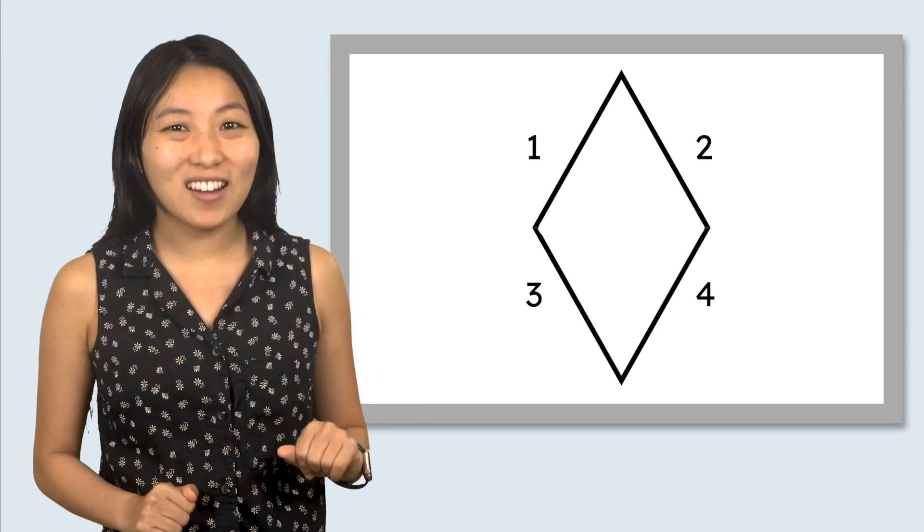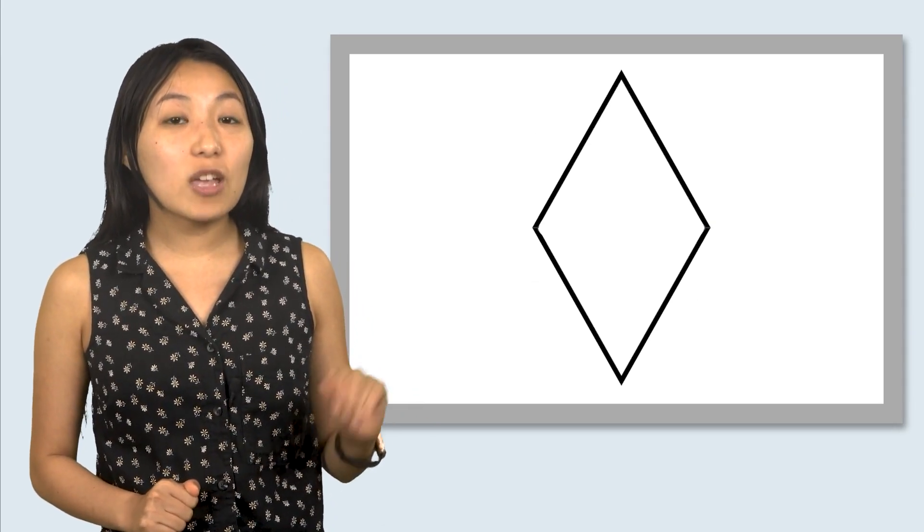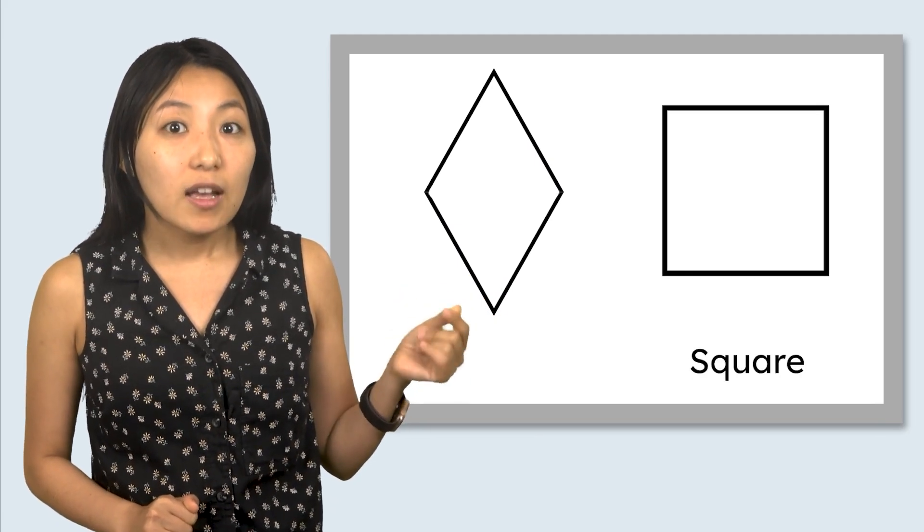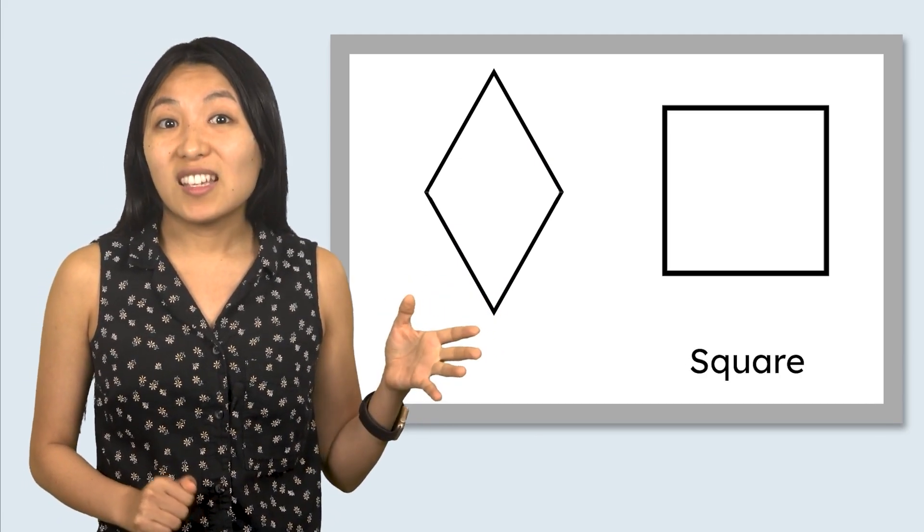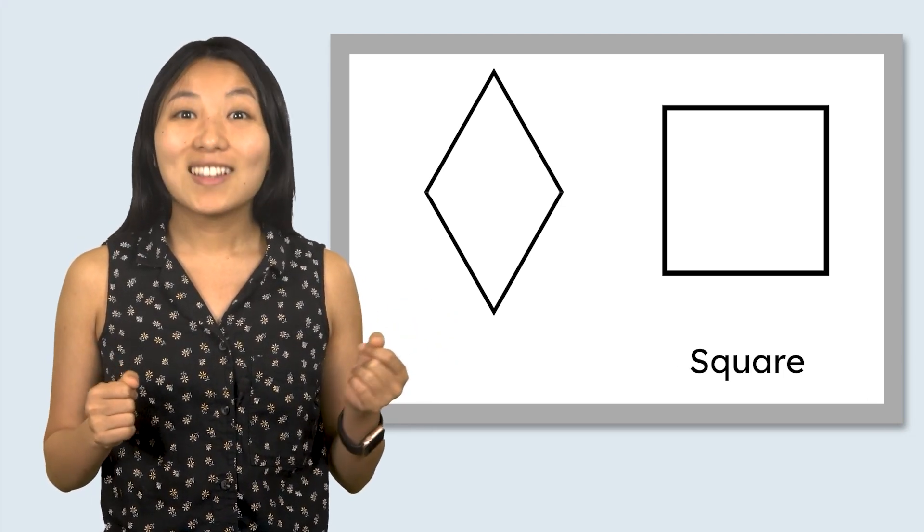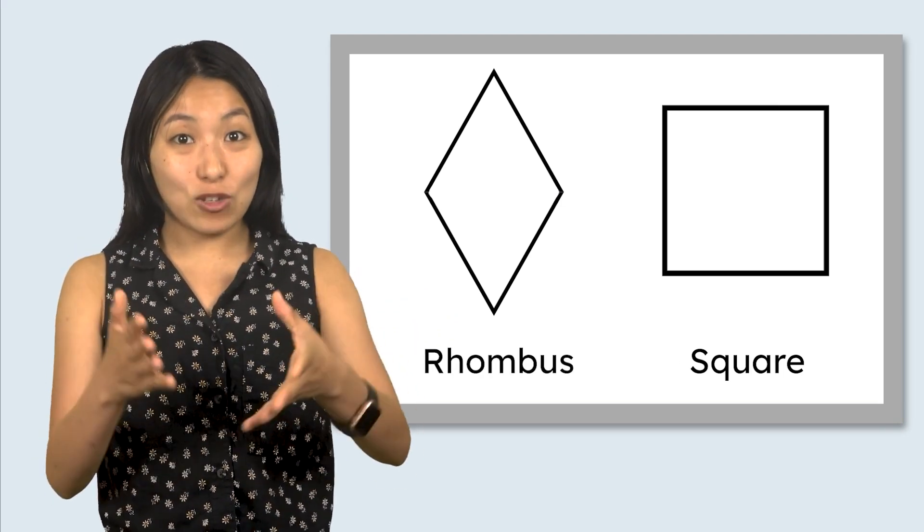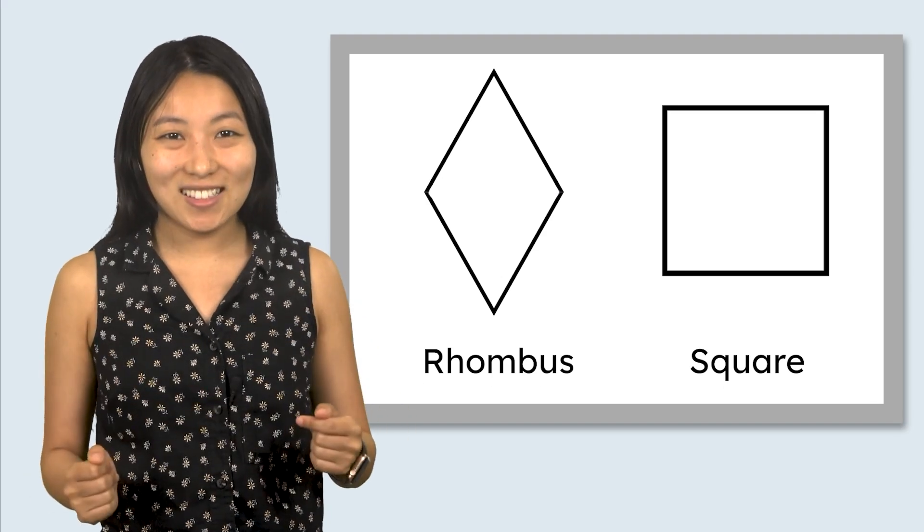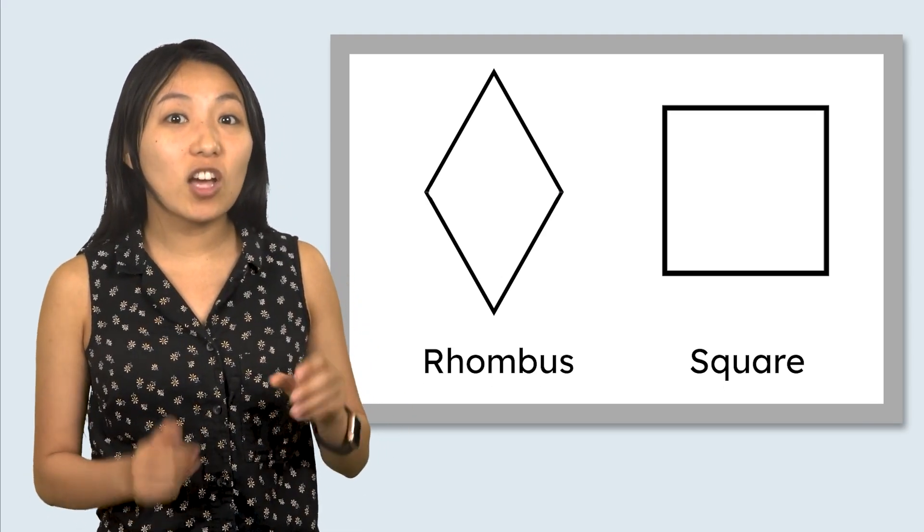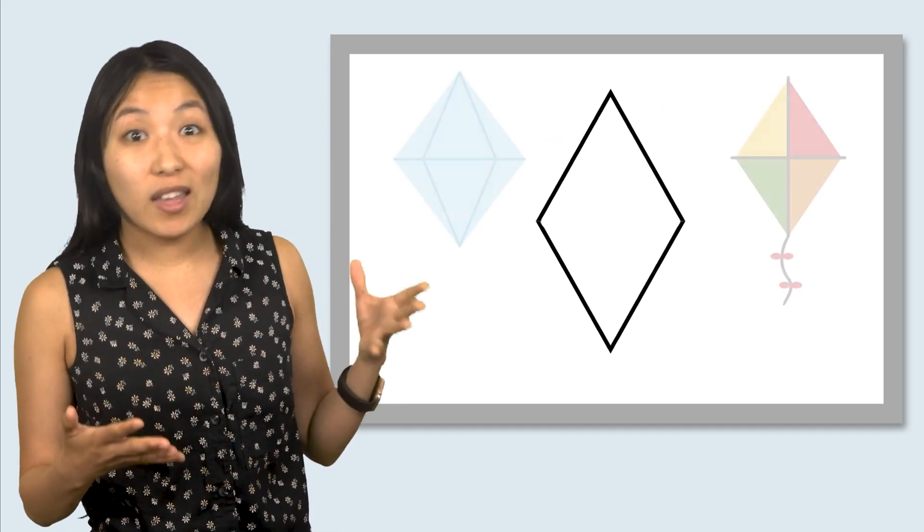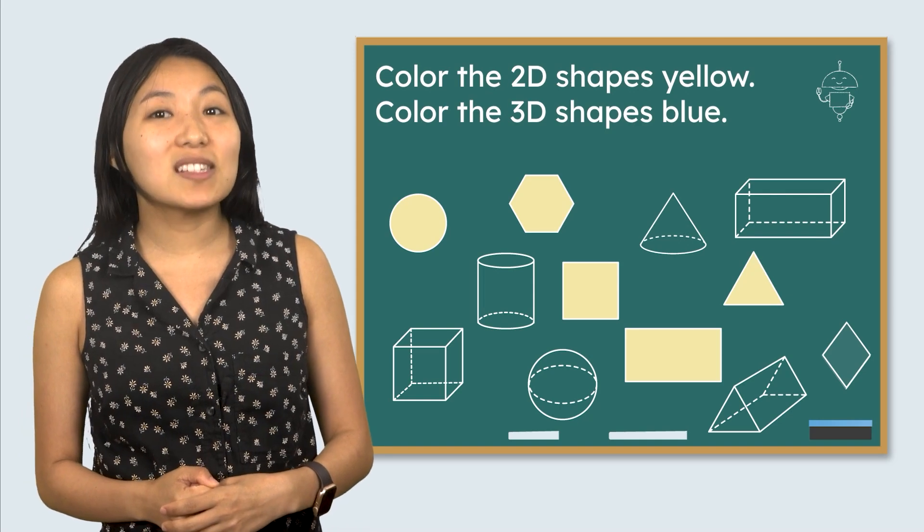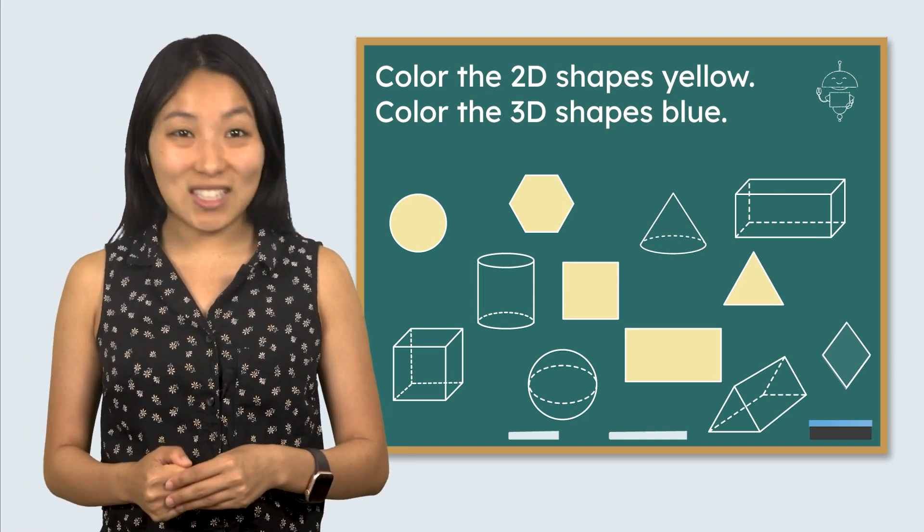Yes, a square. Let's look at this shape and a square side by side. They look kind of similar but the first shape looks like a square got squeezed in by its corners. This shape is called a rhombus. Can you say rhombus? Nice. We can tell it's a rhombus and not a square because it looks more like a diamond or kite. Let's go ahead and color our rhombus yellow because it's a 2D shape.